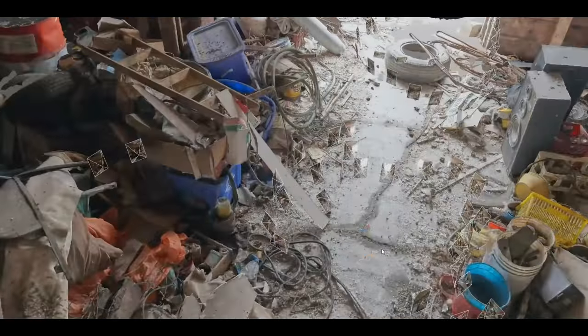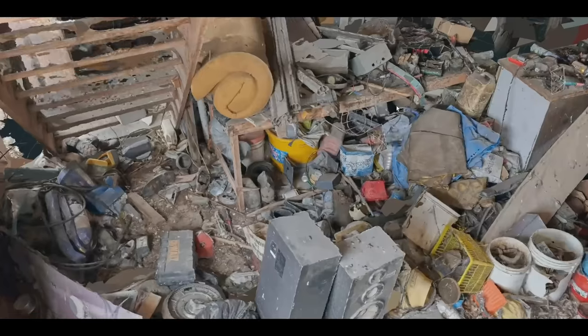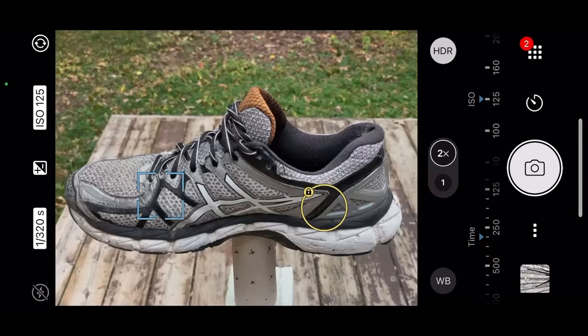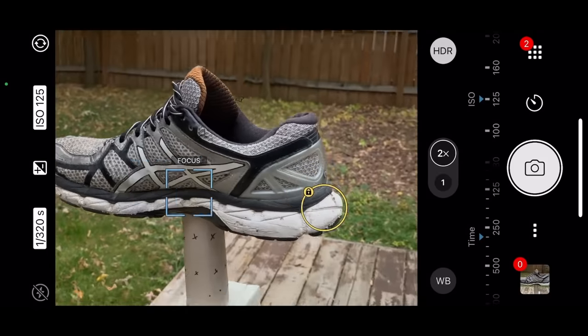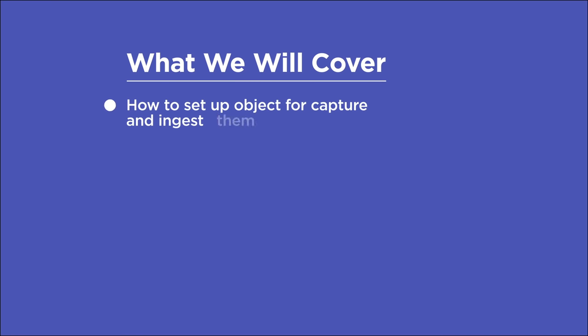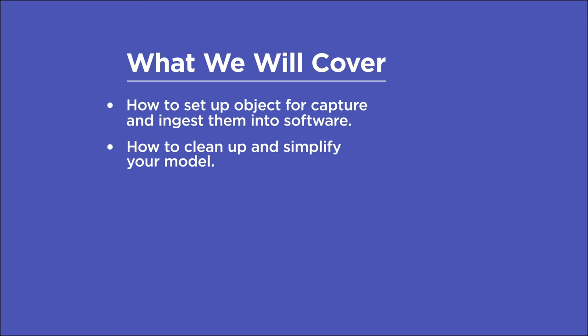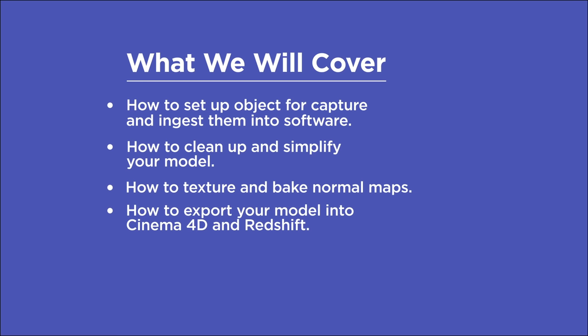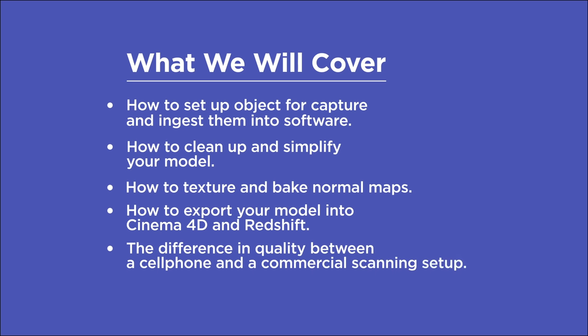Photogrammetry is the science of making measurements from photographs. Using multiple input images, software is able to infer super accurate three-dimensional models that you can put to use. You don't need expensive equipment or complicated software to get started — just your cell phone and some supplies from around the house. In this tutorial, you'll learn how to set up objects for capture and ingest them into software, how to clean up and simplify your model, texturing and baking normal maps, how to export the model into Cinema 4D and Redshift, and the difference in quality between a cell phone scan and a commercial scanning setup.